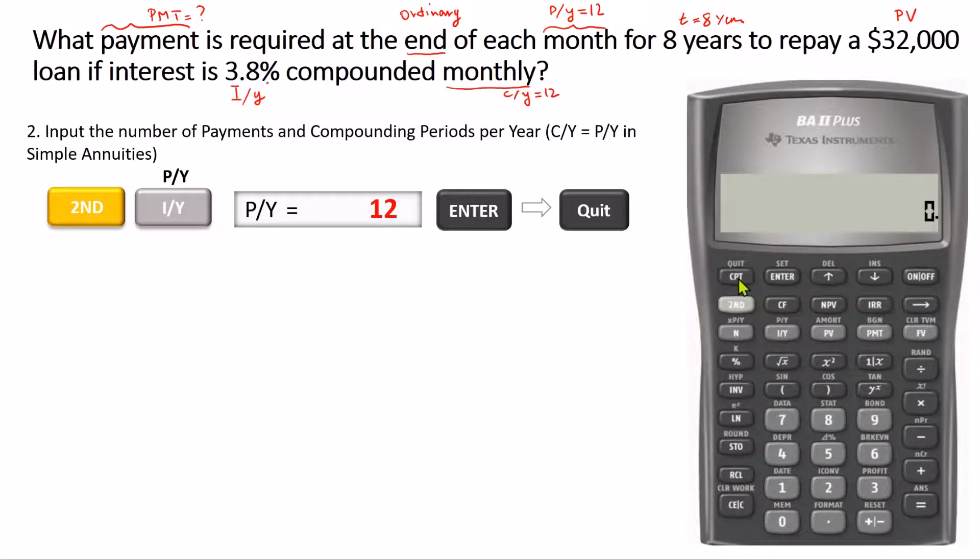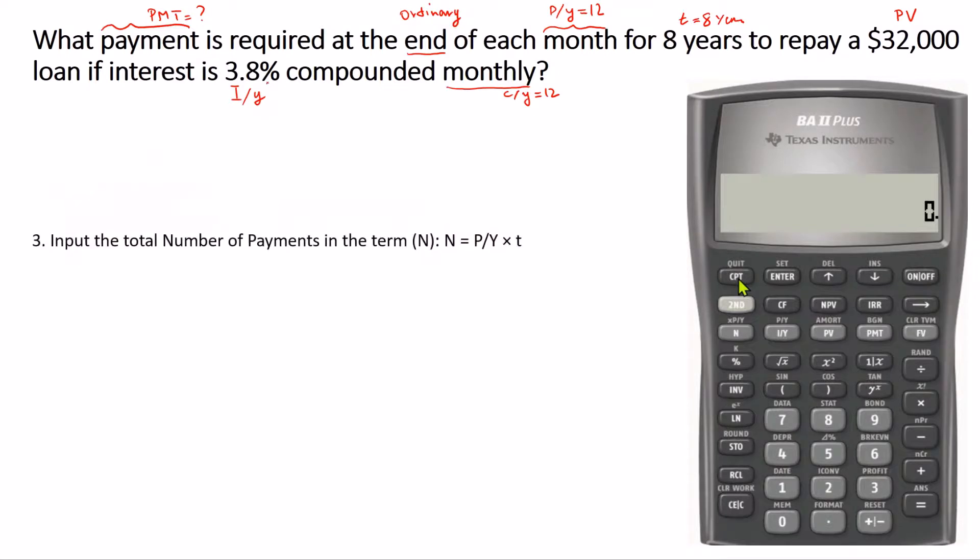This is the number of payments per year (P/Y equals 12) multiplied by the number of years in the term (8). So 12 times 8 is 96. We press the corresponding key for N, and N is set to 96.